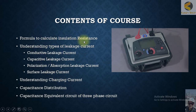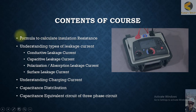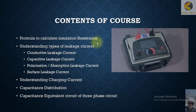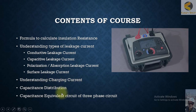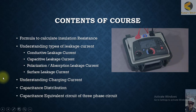We will discuss the formula to calculate insulation resistance — if you know the parameters of any cable or insulation, you can calculate the expected insulation resistance and compare it with results. We will then cover types of leakage currents: conductive leakage, capacitive leakage, polarization absorption leakage, and surface leakage currents. Further, we will understand the charging current phenomenon and capacitance distribution along the insulation.